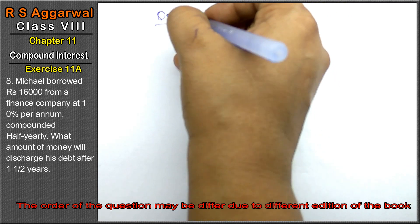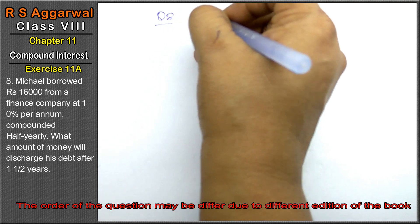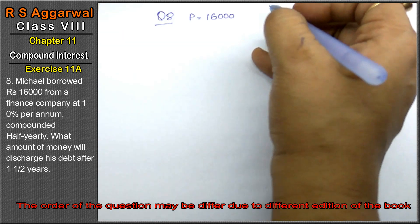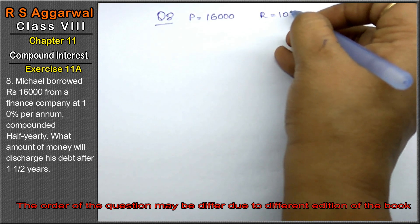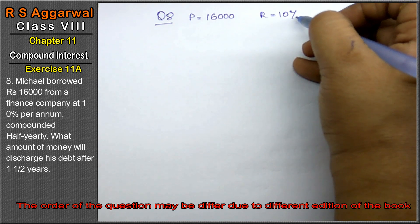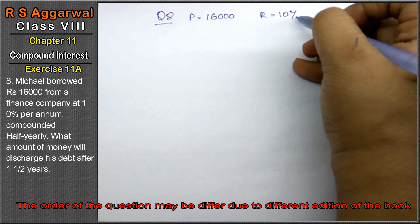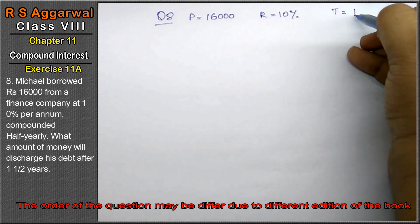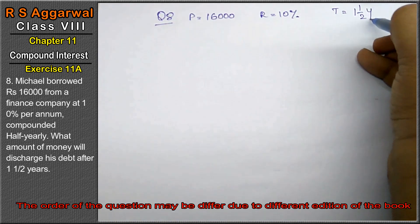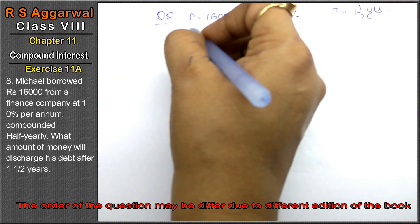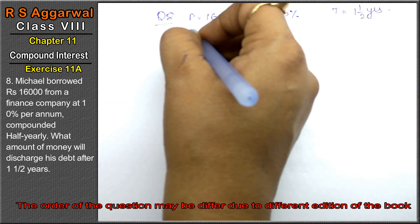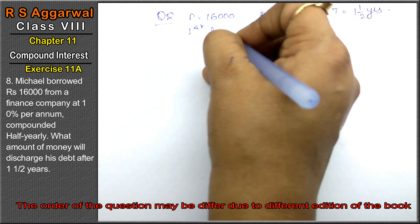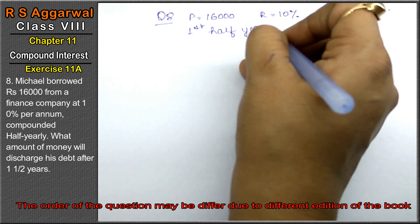Let's do question number 8 of exercise 11A, compound interest. Michael borrowed rupees 16,000 from a finance company at the rate of 10% per annum, compounded half-yearly. We need to find the amount to discharge his debt after 1 and a half years. Since it is compounded half-yearly, we calculate each half year.